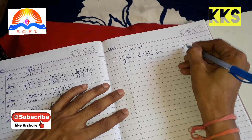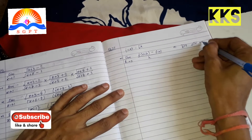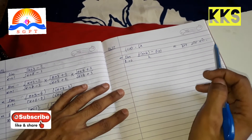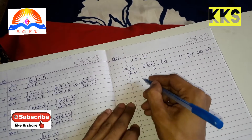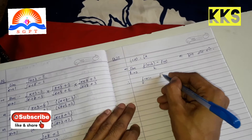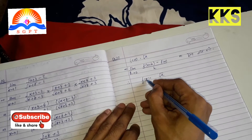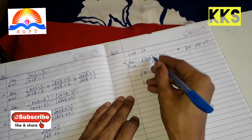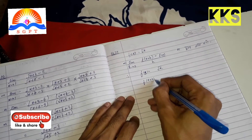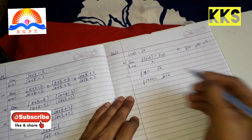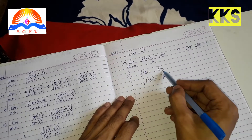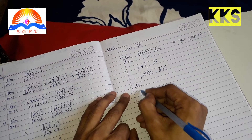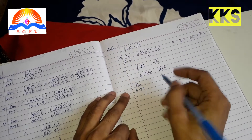तो देखो, सबसे पहले function के अंदर उसकी value को लिखेंगे, उसके बाद ही हम आगे बढ़ेंगे। f(x) = √x, यानि हमारे पास जो भी x की जगह हो उसे root में रखना है। limit के अंदर x+h दिया है तो f(x+h) = √(x+h) और f(x) = √x होगा।